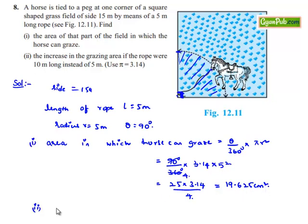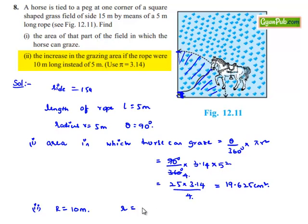Now moving to the second part: what is the increase in grazing area if the length of the rope is 10 meters instead of 5 meters? Let the new radius be capital R equal to 10 meters, and the initial radius be small r equal to 5 meters.